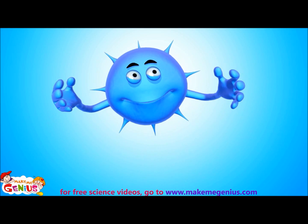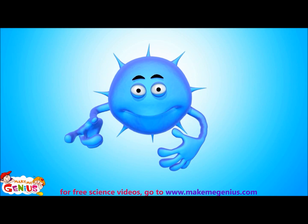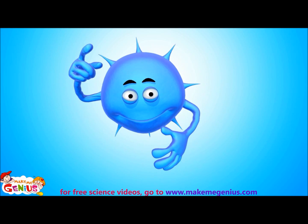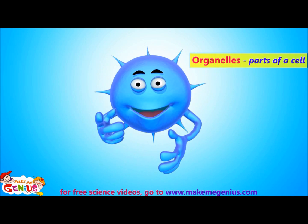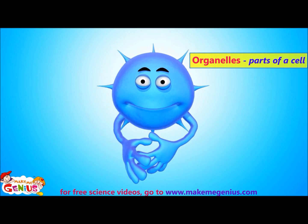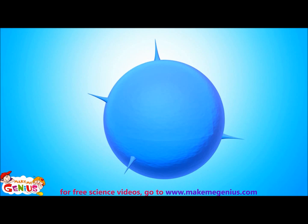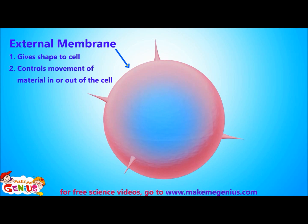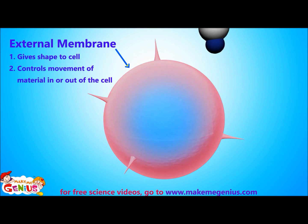So now you know that we are very important. Now let me tell you about my internal parts. My parts are called organelles. Let's go inside my body. Each cell is surrounded by an external membrane, which gives shape to the cell. This membrane allows certain substances to pass through it, thus controlling movement of material in and out of the cell. Oxygen and nutrients can pass in, and carbon dioxide and other waste material can come out of the outer membrane.